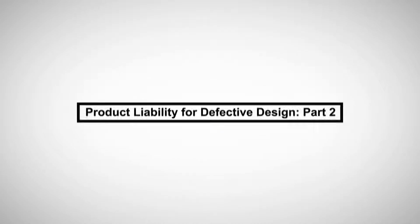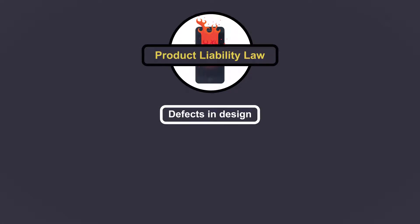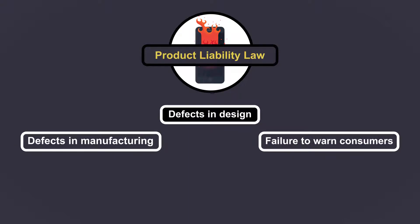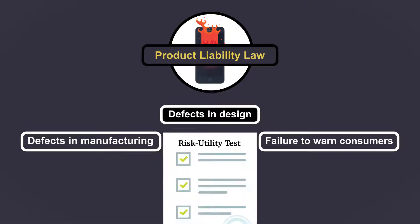In the first part of the presentation, we introduced the concept of product liability for defective design, differentiated it from other forms of product liability, and looked at the risk utility test for determining whether a design is defective.